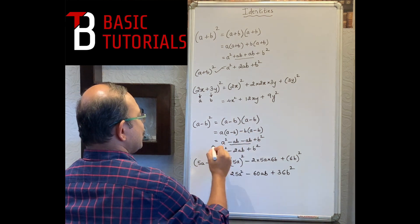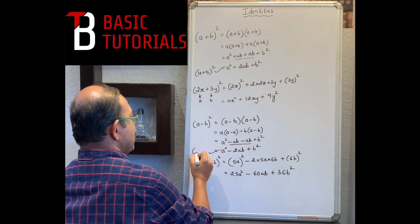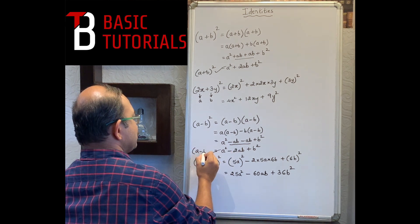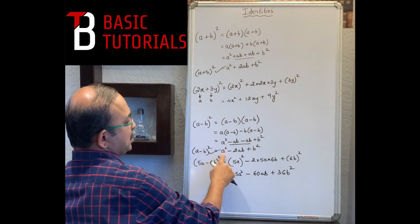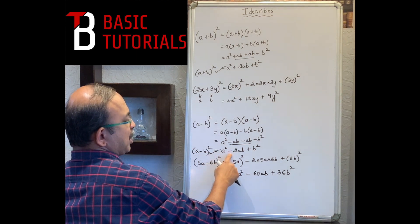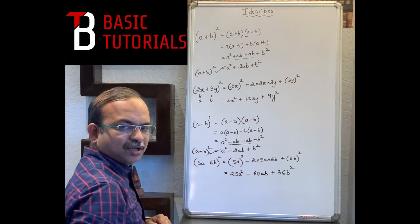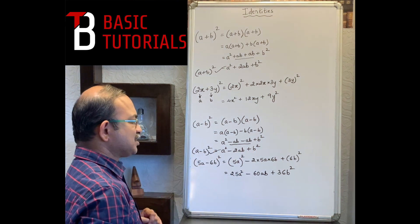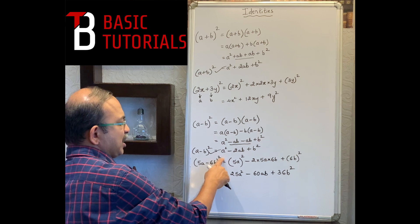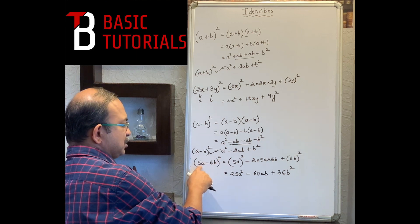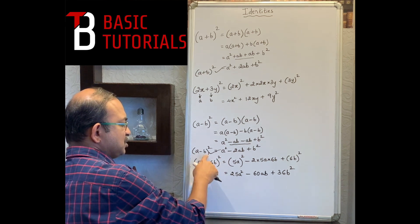You just have to remember this identity: (a-b)² = a² - 2ab + b². Let's take a sum now: (5a - 6b)².